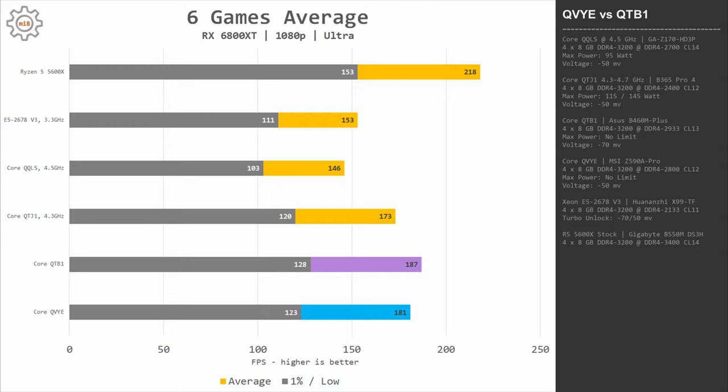Combining all six games together, QTB1 and QVYE provide basically identical gaming performance — about 125 and 185 FPS minimal and average — while QTJ1 gives 120 and 173 FPS. If you're looking for pure gaming performance, QTJ1 is the best value CPU, especially paired with a cheap B365 motherboard. QTB1 is also a great option paired with cheap B460 motherboards. QVYE is the most expensive and requires a more expensive B560 motherboard, making it a significantly less attractive option.